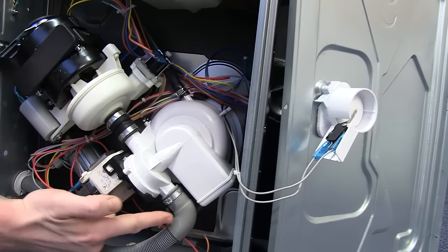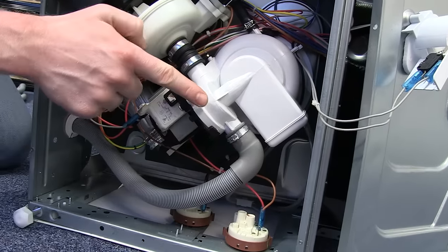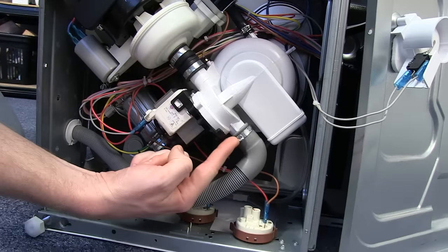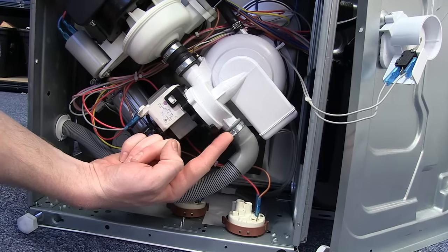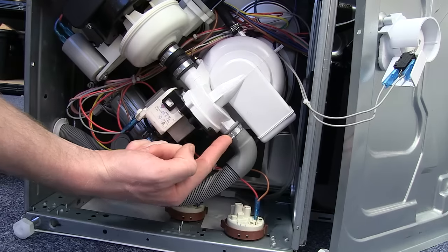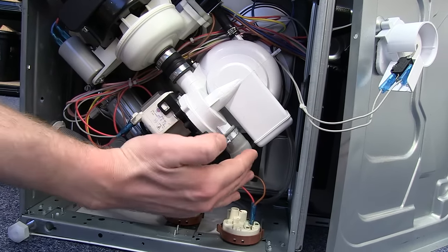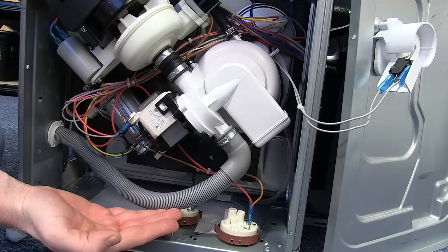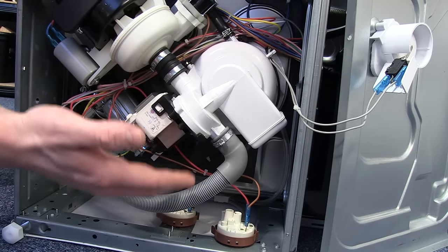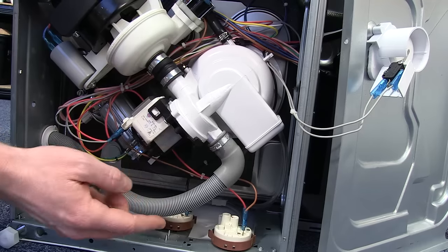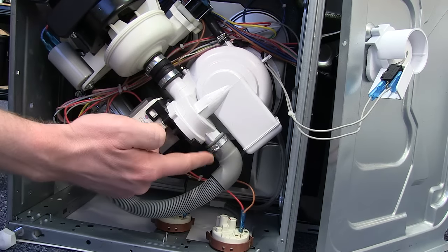And here we have the drain hose connected to the drain pump. What we have here is a manufacturer's clip holding the drain hose in position. This isn't designed to be reused. So as well as purchasing a new drain hose, we also recommend purchasing a 30mm Jubilee clip to replace this clip. But I'll show you how to remove this one.